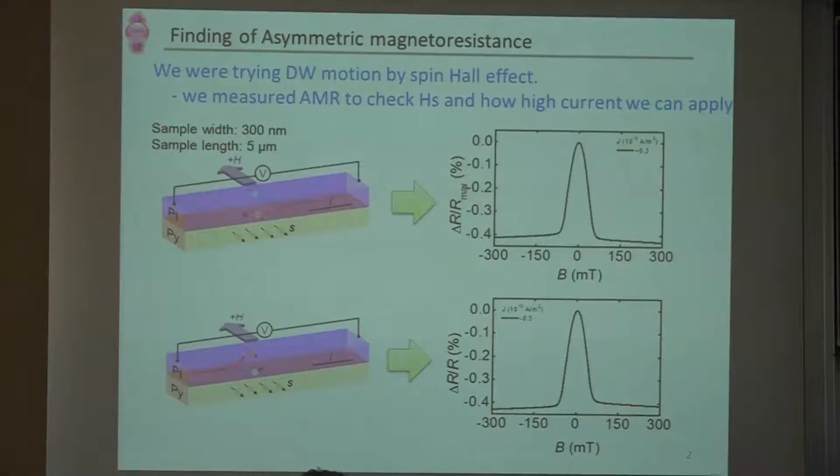The typical sample dimension is length of 5 micrometers and width is about 0.3 micrometers. Before doing domain wall motion experiments, we tried to measure how much external field we need to saturate this magnetic material. So we tried to measure magnetoresistance effects, from which you can determine the magnetic field needed. We also measured current density dependence of this MR, and then you see here by increasing the current, there's a strange effect.